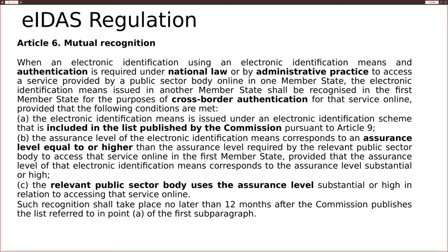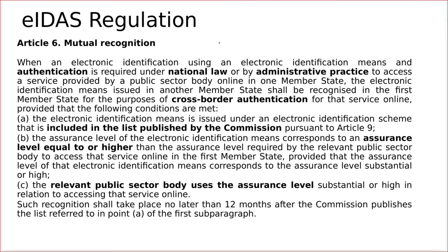To achieve this, the European Commission introduced a mechanism called notification of EID schemas. This notification process requires certain procedures to be in place that give assurance and trust for an identification schema within the European Union. There is no simple process to create and use an EID schema within the EU — you must go through this notification process to prove that your identification schema is capable of being used across the Union.